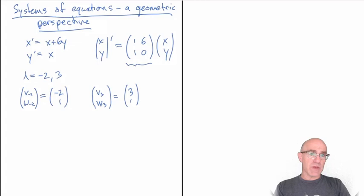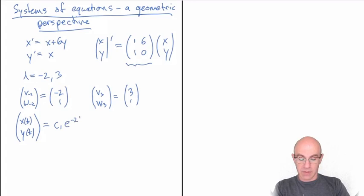The general solution in this case is c1 times e to the minus 2t multiplied by the vector (-2, 1) plus c2 e to the 3t times (3, 1).